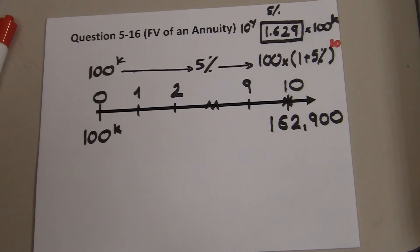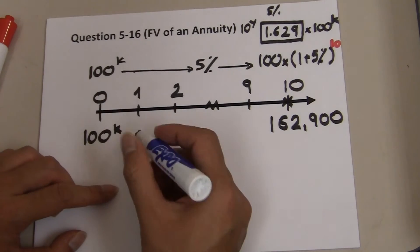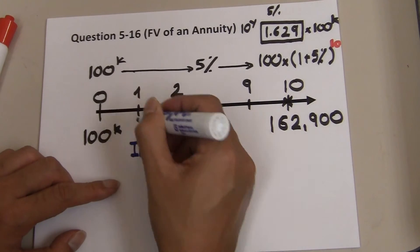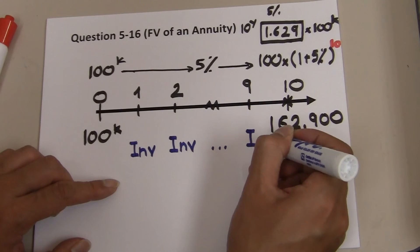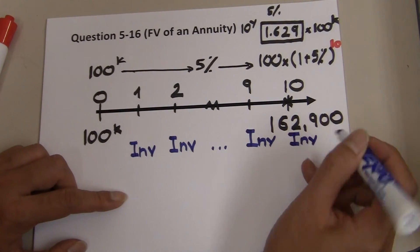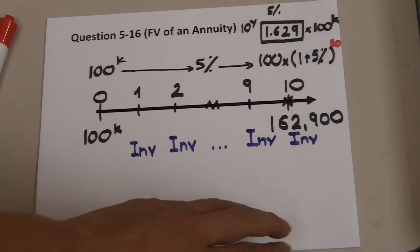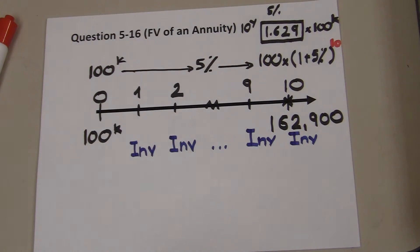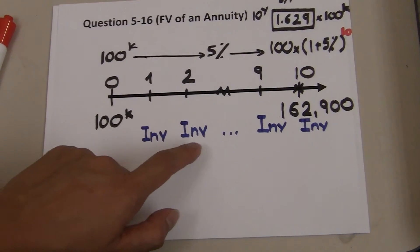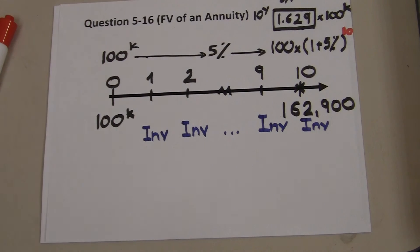The second part: assuming you can earn 10% annually on your investment, how much do you need to invest at the end of each year over the next 10 years? You make one investment at the end of year one, another at the end of year two, and so on through year ten, with the goal of accumulating $162,900 to pay for the house.